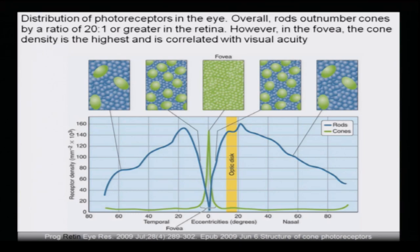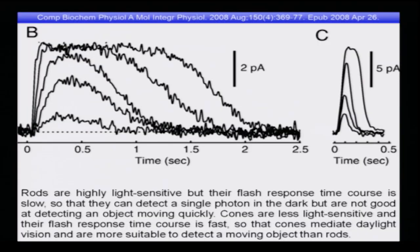Moving on to the different currents being measured. Rods are highly sensitive but their flash response time course is slow — they can detect a single photon in the dark but are not good at detecting quickly moving objects. Cones are less light-sensitive but their flash response time course is fast — cones mediate daylight vision and are more suitable to detect moving objects than rods. Please refer to the Comparative Biochemistry and Physiology Part A reference from 2008.